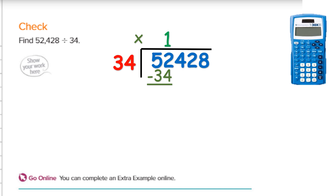That top number — that 2 — if I have 2 fingers, I can't take 4 from it, so I have to borrow. 5 becomes 4, 2 becomes 12. 12 minus 4 is 8. Don't forget the 4 and the 3 in the tens column — we have 1 left over. So I have to show that 4 minus 3 equals 1. Now I bring down my 4. I have 184. Type that into your calculator: 184 divided by 34, and you should see 5 and stuff, because 5 times 34 is 170.